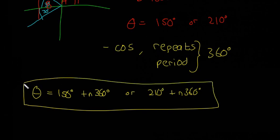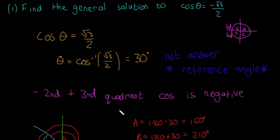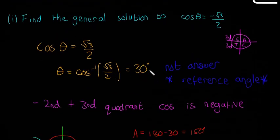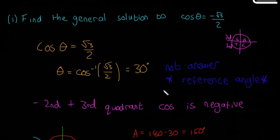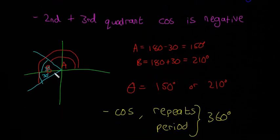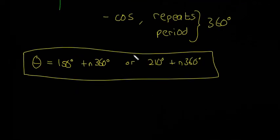So that's the method every time. First, find the reference angle using inverse cos or inverse sine of your number — it's not your answer. Second, draw the ASTC circle and find which quadrant your function is negative or positive in. Third, draw those angles in the relevant quadrants. Fourth, find both angles measured from the positive x-axis. Finally, write the general solution. We'll go through three or four more examples and have plenty of practice.